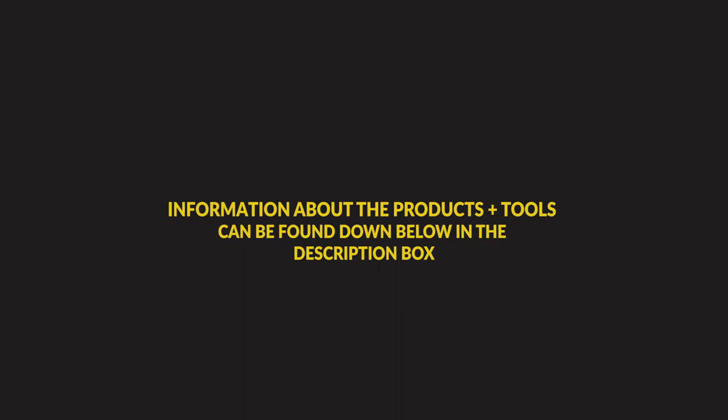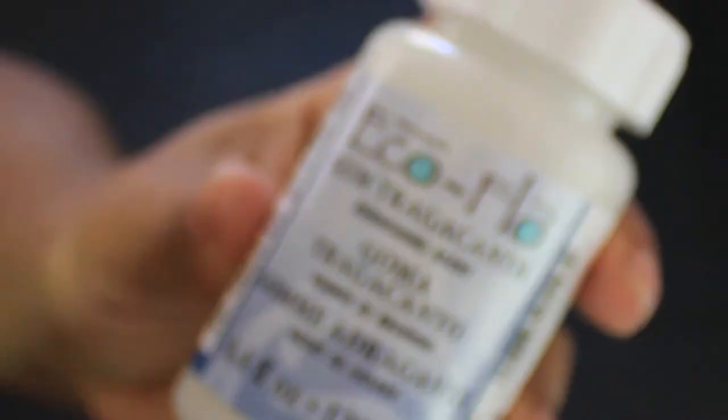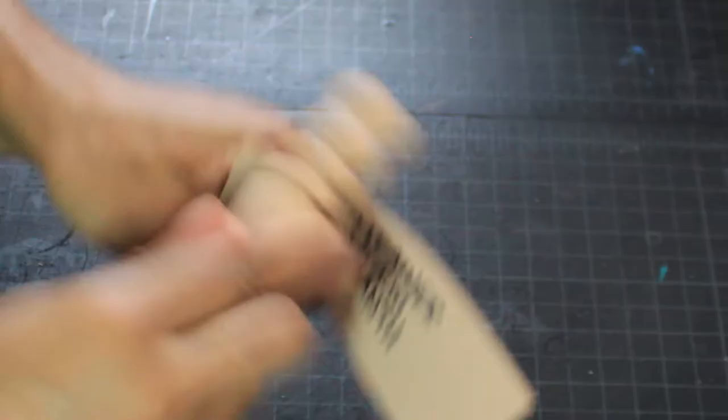I'll see you at the finish line. Okay, so let's get into our first product. This is called Eco-Flo Gum Tragacanth. I would rate this as good. A small bottle goes a long way, and also note that this is not a paint but a burnish. I'm including it in this video because if you want a nice natural looking edge, this is a great option. It's a low-cost, easy-to-do finishing technique.